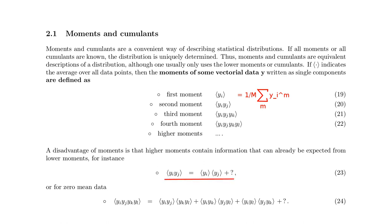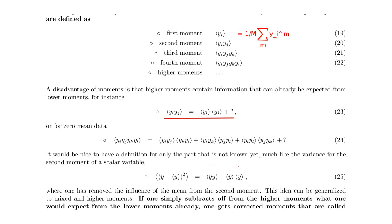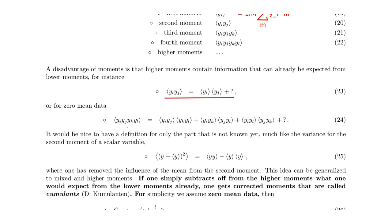Looking at the second order moment of Y_i and Y_j, it's quite obvious that if the data is not zero mean, a large contribution to this term would be the product of the mean of Y_i and Y_j, with something left over not described by simply taking the product of the means. For the fourth order cumulant with zero mean data, we can expect pairwise products of second order moments: Y_i Y_j times Y_k Y_l, plus Y_i Y_k times Y_j Y_l, etc.